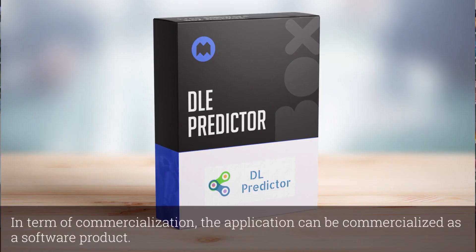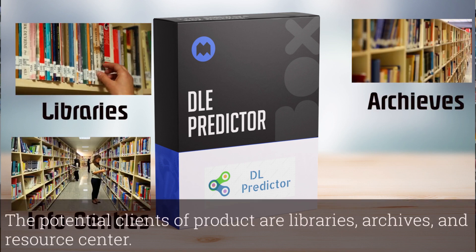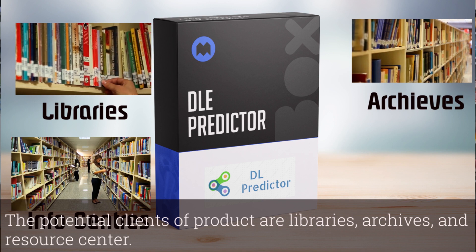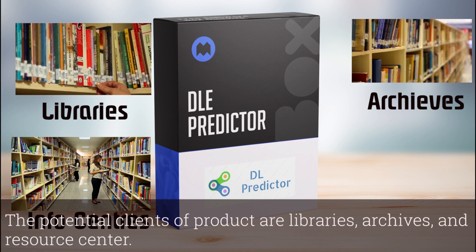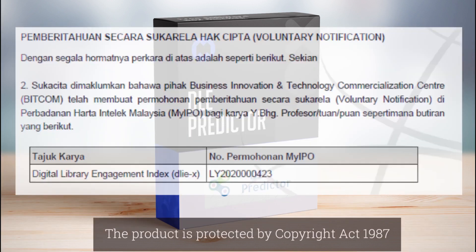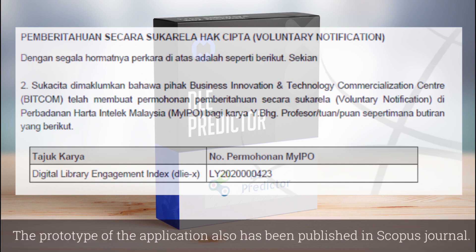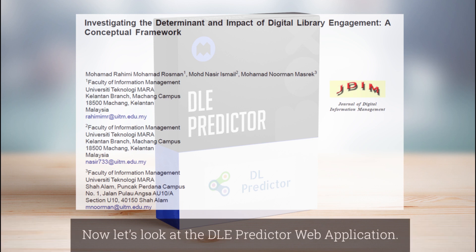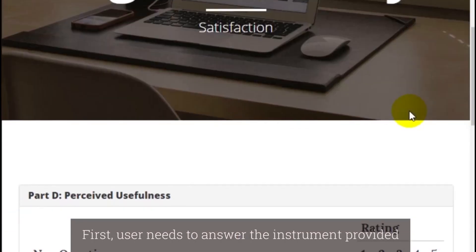In terms of commercialization, the application can be commercialized as a software product. The potential clients of the product are libraries, archives, and resource centers. The product is protected by the Copyright Act 1987. The prototype of the application has also been published in Scopus journals. Now, let's look at the DLE Predictor web application.